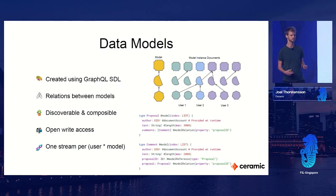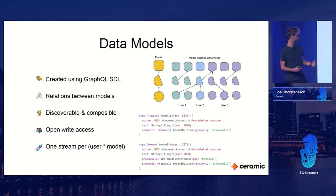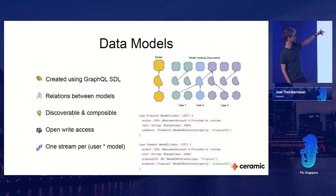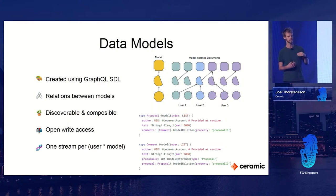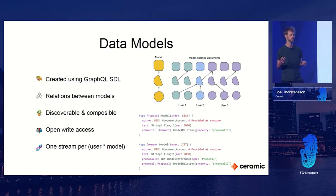The core building block of ComposeDB is a data model. A data model is created using the GraphQL schema definition language, and it basically maps onto a JSON schema that you can use to verify the integrity of your data. You can see in the bottom right what the syntax looks like. The data model is created by a developer, and you can have relations between these models. The yellow model on top might be a proposal, the one below a comment - and you can see the comment has a pointer up to which proposal it relates to. You can query the proposal and get back all the related comments. Application A might define the proposal and comment data model, and application B can pull that into their application and add upvotes as a third data model.